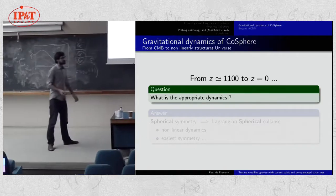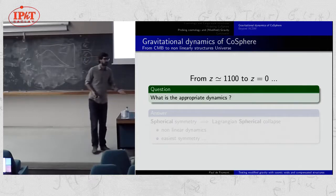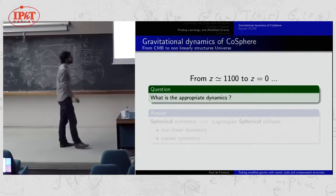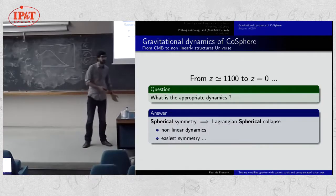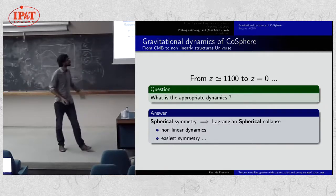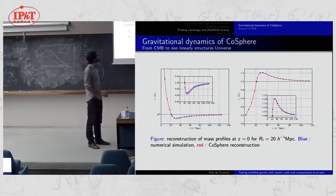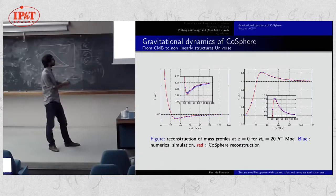Now the question is: how can you pass from very high redshift Gaussian random fields to the actually nonlinearly structured universe? What is the appropriate dynamics? Since we are considering spherical regions by definition, the simplest dynamics to use is spherical collapse, because it provides nonlinear dynamics beyond the linear or Zel'dovich approximations, and it is the simplest symmetry we know in physics. Combining the Gaussian random field prediction with spherical collapse, you can show that you are indeed able to reproduce the profile today with very high accuracy.